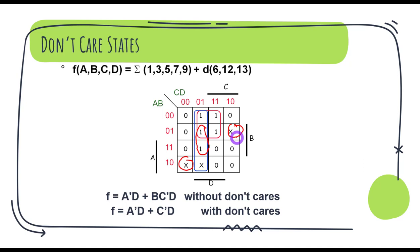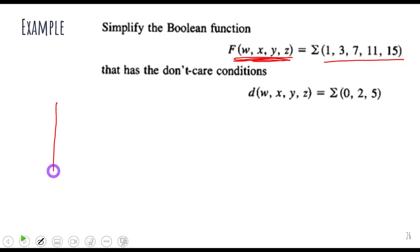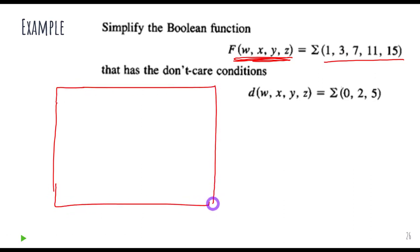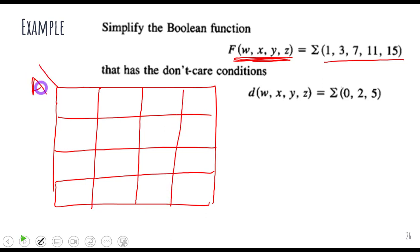We only use don't care conditions if they benefit us; otherwise we just leave them. Now let's quickly solve a live example. I have a four-input circuit, and these are the minterms of that circuit. Let's draw the K-map for this circuit.